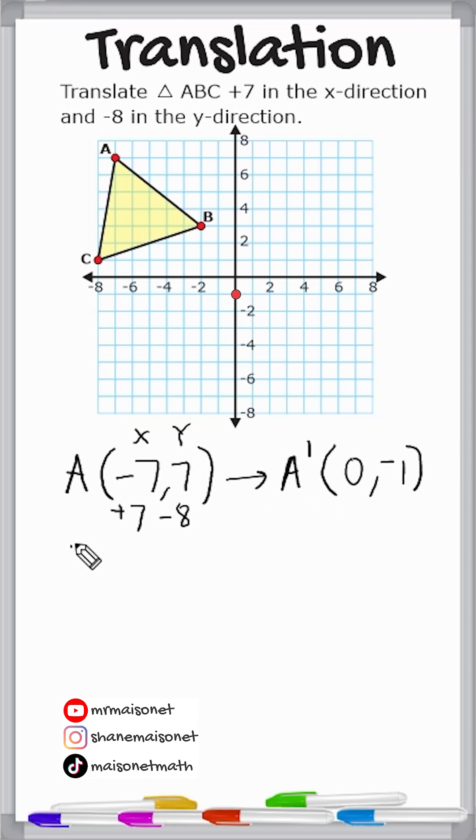Let's take a look at point B, which is currently located at negative 2, positive 3. So once again, to figure out the new location of B, we're going to add 7 to the x and subtract 8 from the y. Negative 2 and positive 7 is positive 5. 3 and negative 8 results in negative 5.